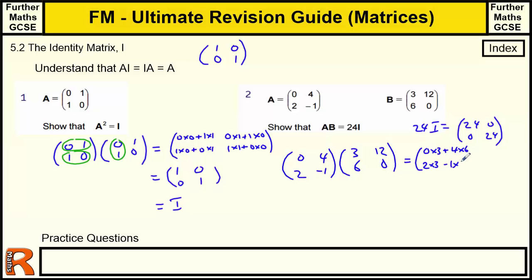And then we've got the same on this column. So we've got 0 times 12, plus 4 times 0. And then 2 times 12, minus 1 times 0.